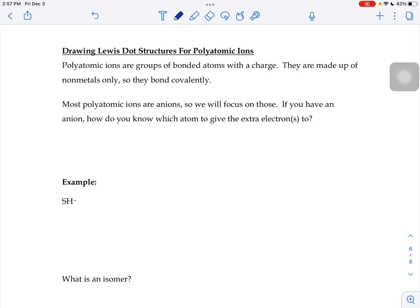The next type of structure we're going to draw pictures for is something called a polyatomic ion. If we break down this term, poly means many atoms, and then an ion is something with a charge. So it's a group of bonded atoms that have a charge.